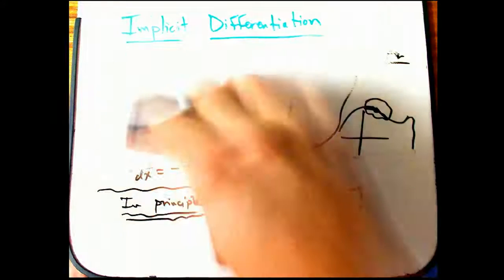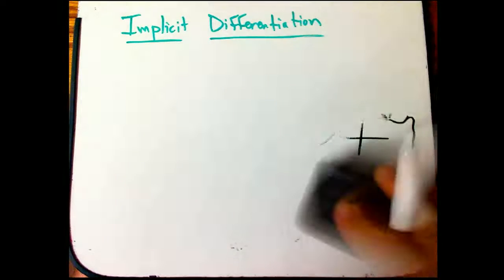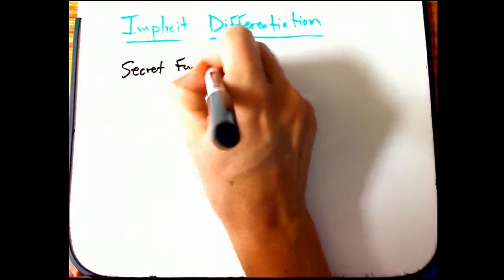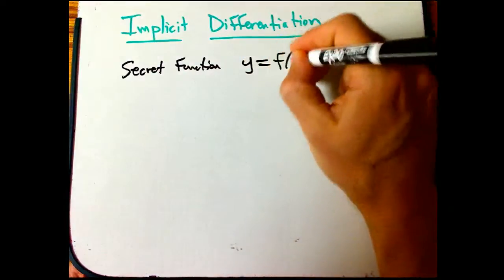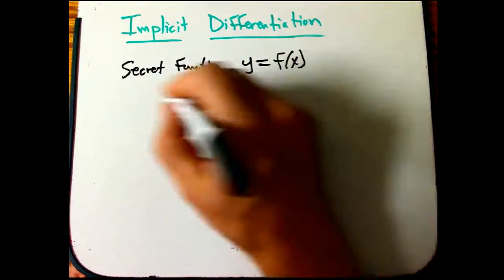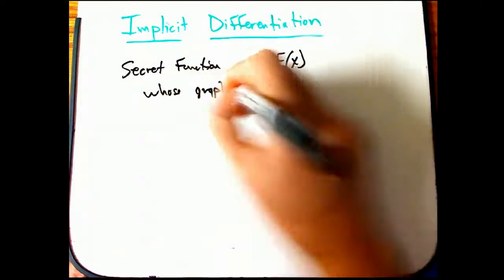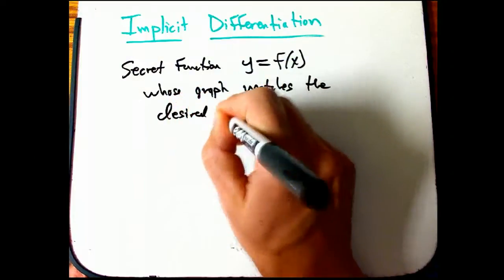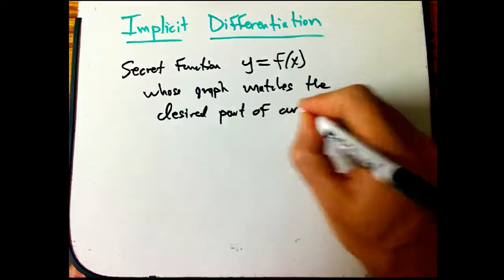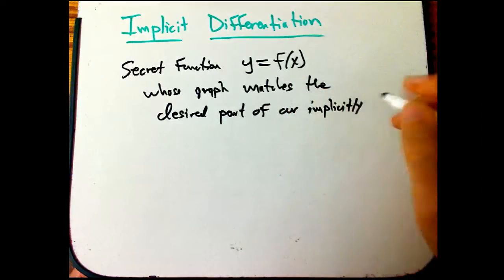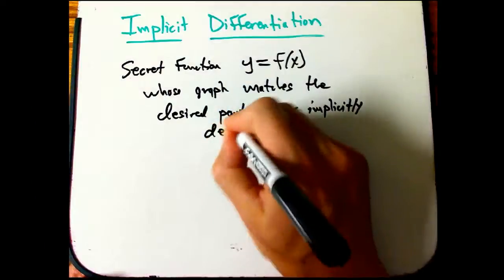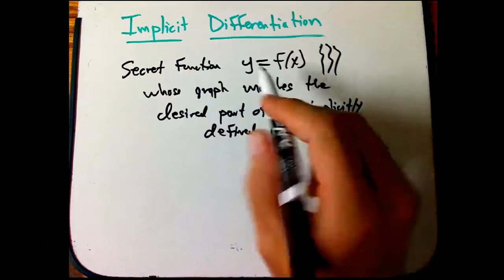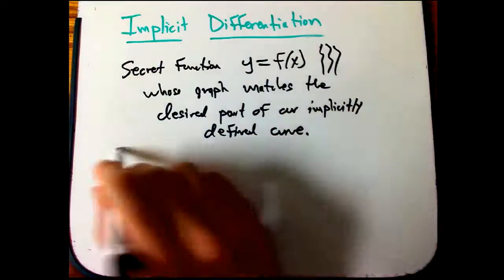So what we want to think about is that we've kind of got a secret function that we may or may not ever have explicit access to. Y equals little f of x, whose graph matches the desired part of our implicitly defined curve, just by an equation, where it's not solved explicitly for y. So this is going to be the background of everything. We're going to try to sort of take the derivative of f without having a formula for f, which is pretty cool that we could actually do that.